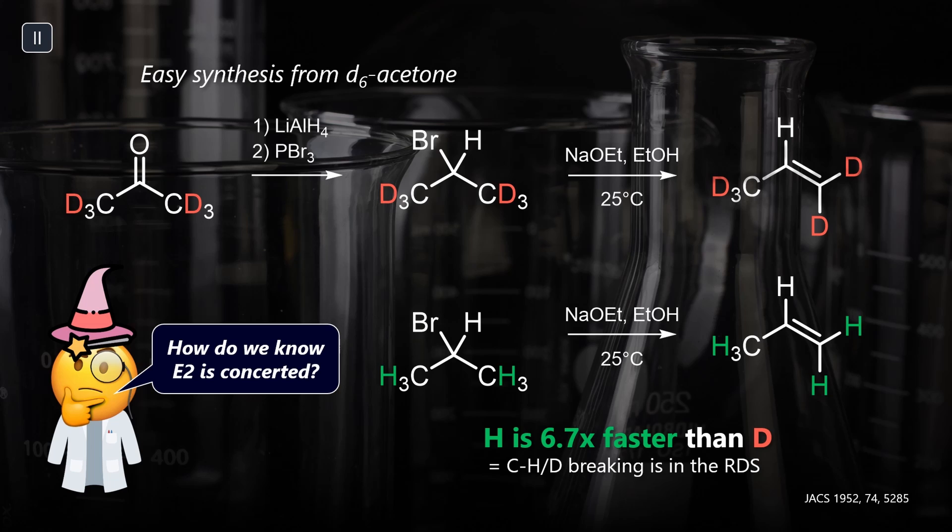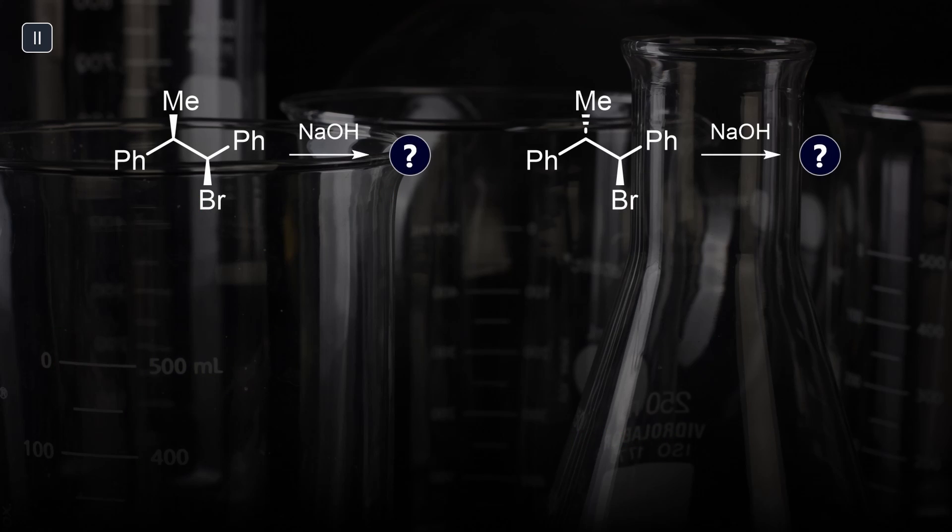So we know that the rate-limiting step involves breaking of this particular bond. As a second argument for the concerted mechanism, E2 reactions can be highly stereospecific. Let's look at these two diastereomeric educts. Will they lead to the same product?